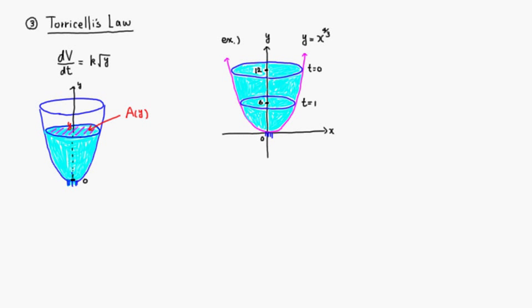Okay, let's look at Torricelli's Law. The differential equation for Torricelli's Law is dV/dt equals k times the square root of y. But since you have V, t, and y, there are three variables going on.